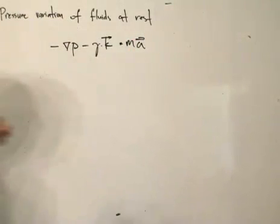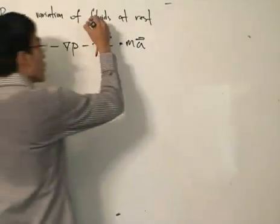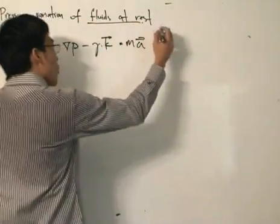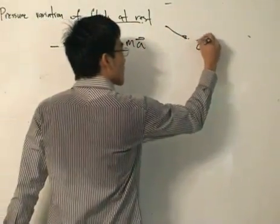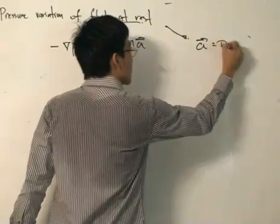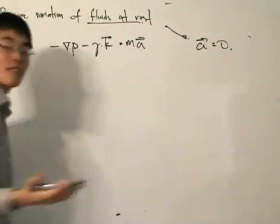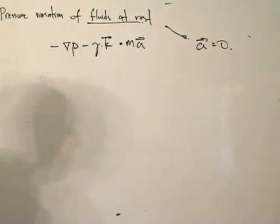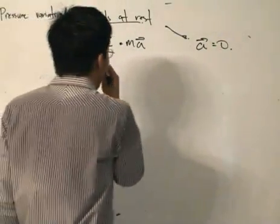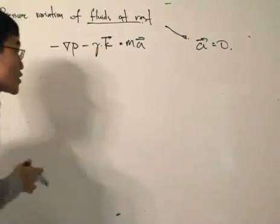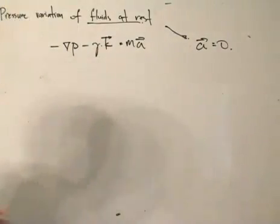We are concerned with fluids at rest. What do we know about fluids at rest? The acceleration is equal to zero. Acceleration equals zero can also mean constant velocity, but let's take it as: acceleration equals zero means fluid at rest.